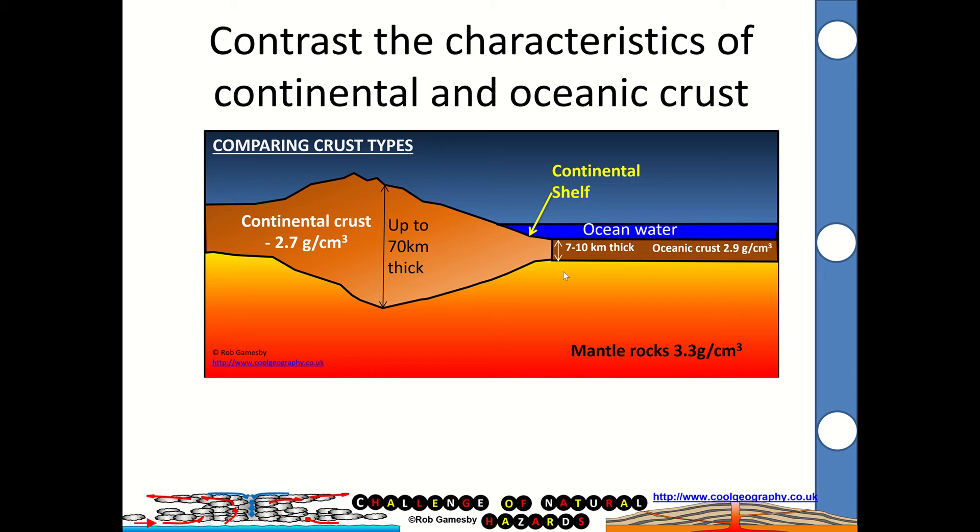Now, if you remember rightly, the oceanic crust is heavier, it's younger, it gets destroyed, and it's thinner. The continental crust is older, it's a lot thicker, up to 70 kilometers thick, and it's lighter.